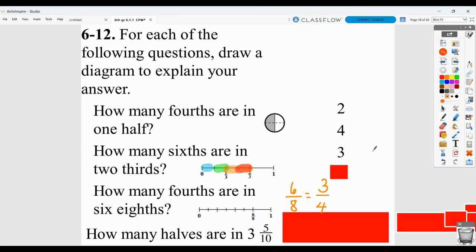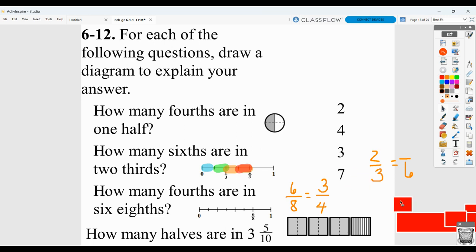Same thing here. How many 6ths are equal to 2 3rds? Well, if you make 2 3rds into 6, you can see that that's going to be 4 6ths. And then how many halves are in 3 and 5 tenths? So, this is 1 whole 2, 3, and 5 tenths. And so, there are a total of 1, 2, 3, 4, 5, 6, 7 halves.